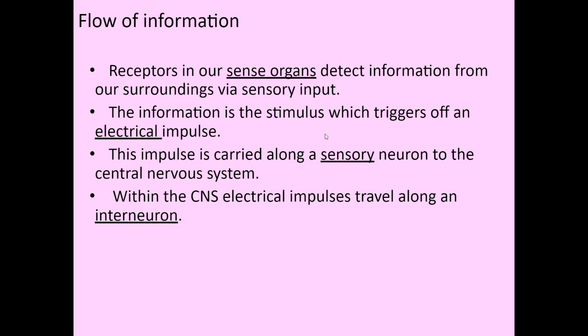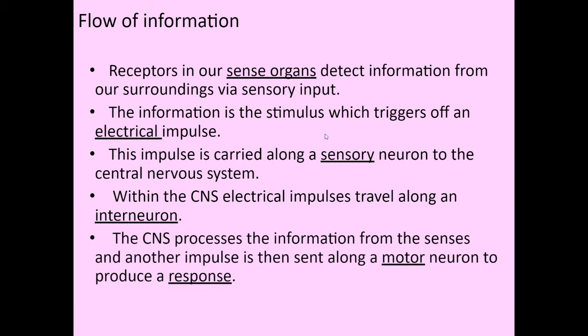Within the central nervous system — brain and spinal cord — the signal will travel up through the interneurons. The central nervous system will think about and process that information from the senses. If you put your hand on something that is hot, you might see the flame, you might smell the burning, you might feel the heat, and together your brain will take all that sensory information and say, 'I am touching something that is on fire.' So the CNS processes that information, and then your brain might think, 'I should probably move my hand.'